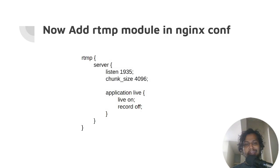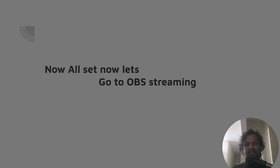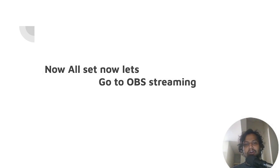Add the RTMP module at the very bottom of your Nginx configuration file, and that's it — all set. Now we have to do other things using OBS and the VLC media player.